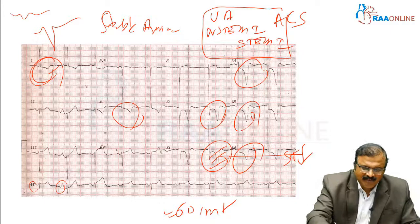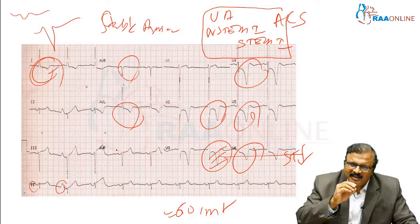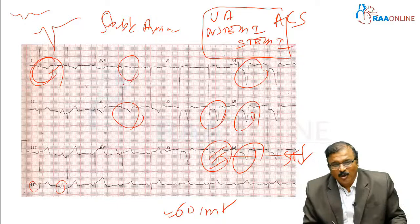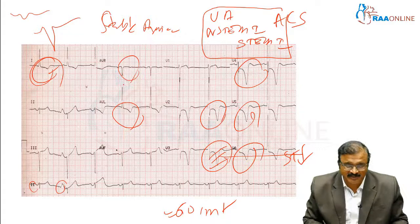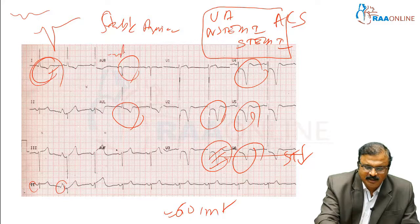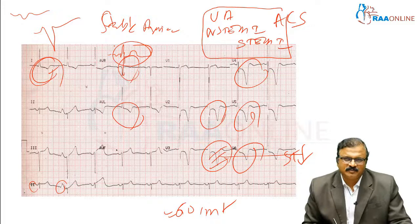Look at AVR. Normally in AVR, all complexes are negative — P is negative, QRS is negative, T is inverted. The clue to acute coronary syndrome, specifically unstable angina or NSTEMI, is that there will be an upright T wave in AVR to confirm it is NSTEMI.